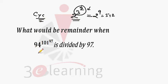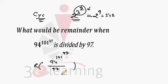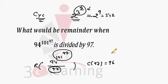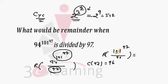We have to divide 94 raised to power 101 raised to power 97, by 97, and find the remainder. So we find the cyclicity of 97, which is 96. The power is 101 raised to power 97, and 94 is the base. We divide the power — 101 raised to power 97 — by 96 and find the remainder. We then have a new question: 101 raised to power 97 divided by 96, so we find the cyclicity of 96 and divide 97 by it.